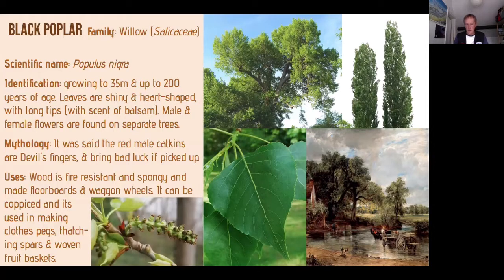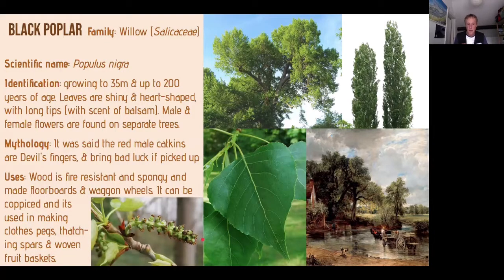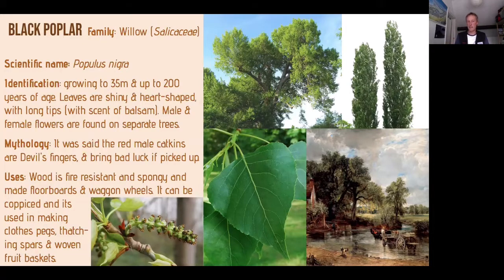The black poplar's wood is resistant and spongy, like many willows. It's good for floorboards, wagon wheels, and coppices well, enabling regeneration. It's great for clothes pegs, thatching spars, and fruit baskets. Like willow, it has that pliable texture.